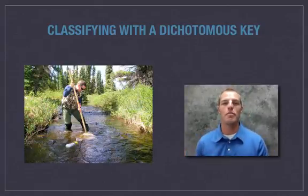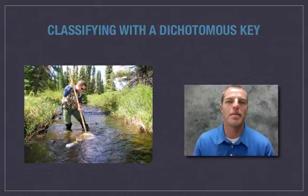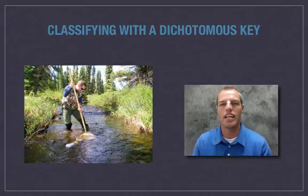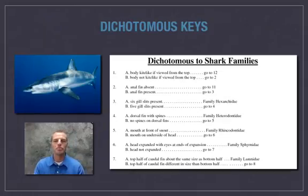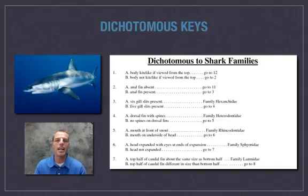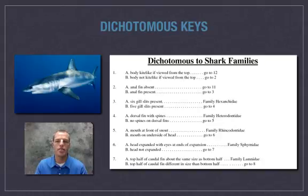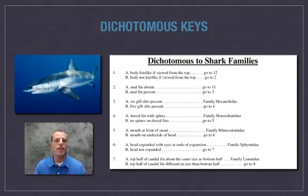We will not be classifying today with a full-sized dichotomous key. We're going to practice on a smaller one to get the idea. We have a shark here that we're going to classify. On the right is our dichotomous key, which puts sharks into different families. We're going to use it to predict what family this particular shark belongs to.